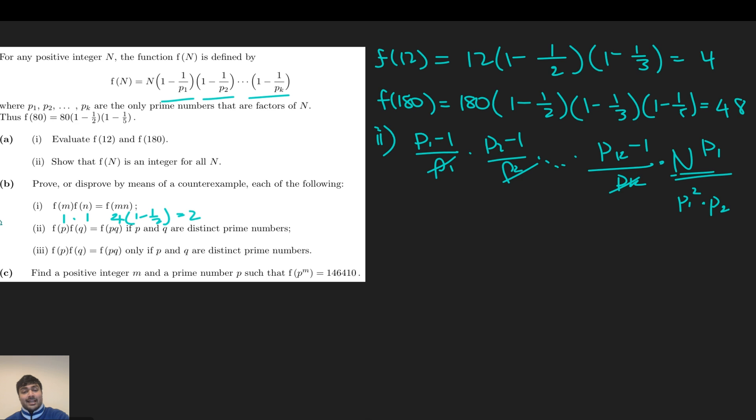Part 2: f(p) times f(q) equals f(pq), if p and q are distinct primes. This turns out to be true. It's not too difficult to see why this is true, because if we start with f(pq), that's just going to be pq multiplied by (1 minus 1/p)(1 minus 1/q). But since p and q are distinct primes, I can just pair these up because multiplication is commutative. And that there is f(p), and that there is f(q). So that is Part 2.